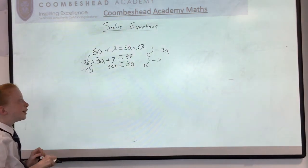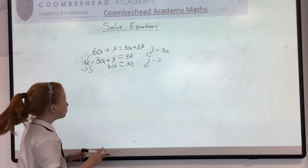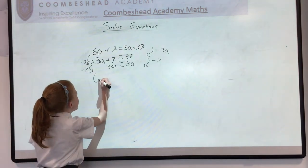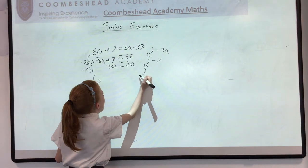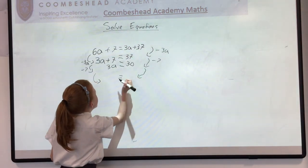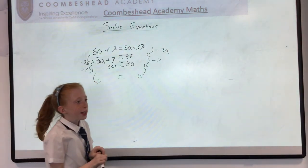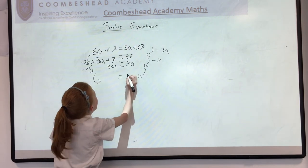Now, the inverse we're going to do now is division. So that would be, so 30 divided by 3 equals 10.